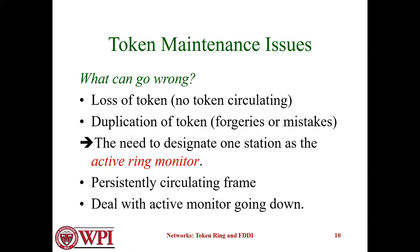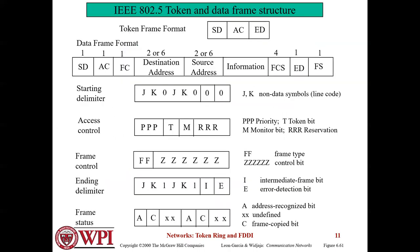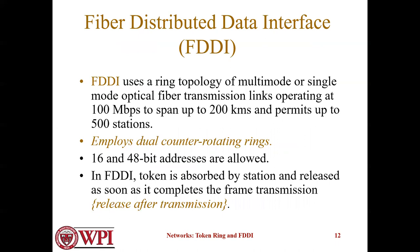What can go wrong with Token Ring? Loss of token, duplication of token, and the need to designate one station as an active ring monitor. A persistently circulating frame is dealt with by the active monitor. Here is also shown the token and data frame structure.